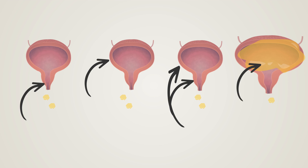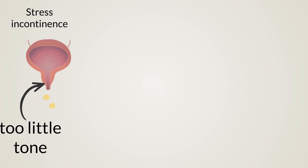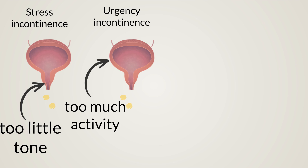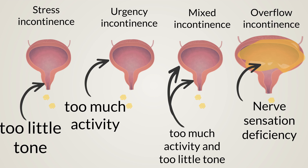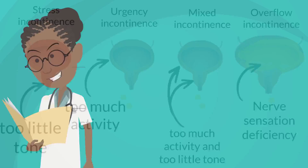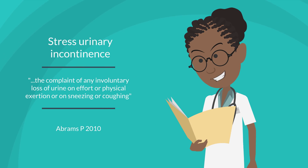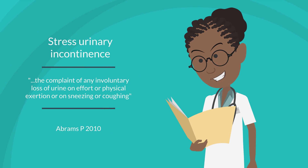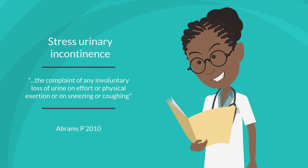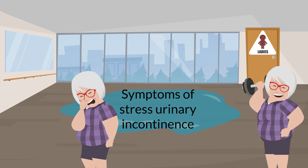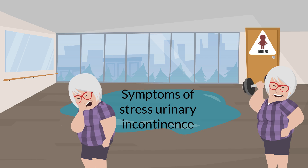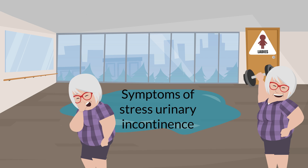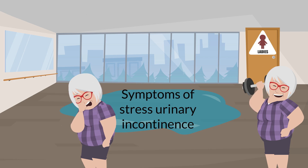We will review four types of urinary incontinence: stress, urgency, mixed, and overflow, and the root causes. Stress urinary incontinence is defined as the complaint of any involuntary loss of urine on effort or physical exertion, or on sneezing or coughing. Symptoms of stress urinary incontinence include leaking with coughing, laughing, exercise, or other increases in intra-abdominal pressure.